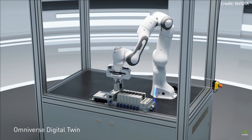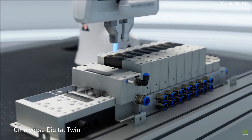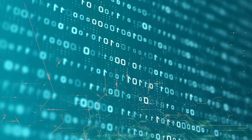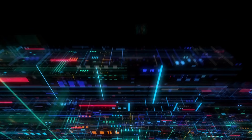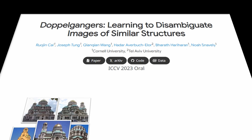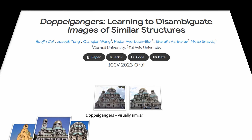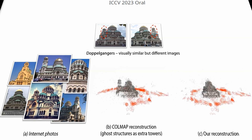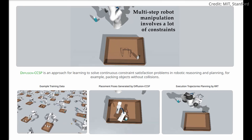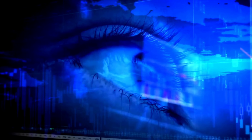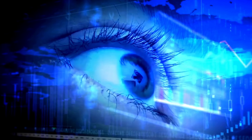The horizon for robots is broader and brighter than ever. Meanwhile, hot on the heels of MIT and Stanford's game-changing Diffusion CCSP framework, researchers from Cornell and Tel Aviv universities have unveiled a compelling breakthrough of their own in the realm of computer vision. Called Doppelgangers, this novel approach targets one of the most challenging problems in 3D image reconstruction and geometric vision tasks: visual disambiguation. If Diffusion CCSP is set to revolutionize how robots think, then Doppelgangers aims to radically sharpen how computers see.